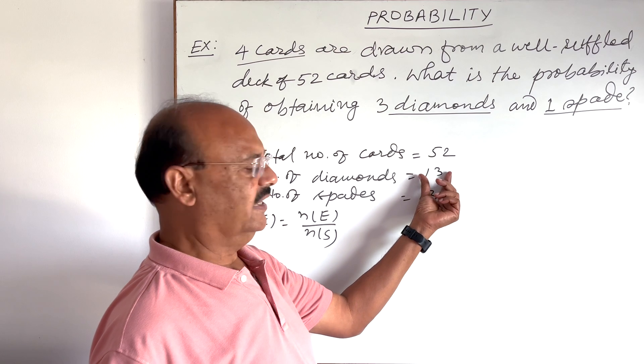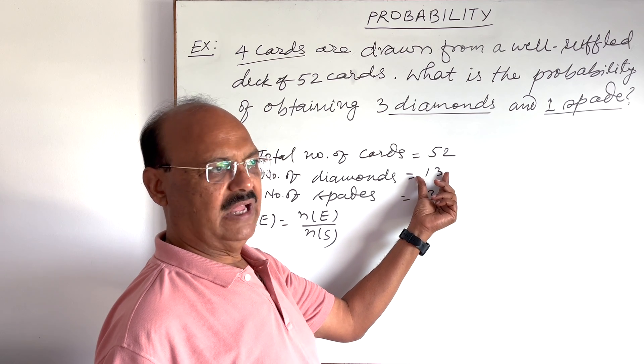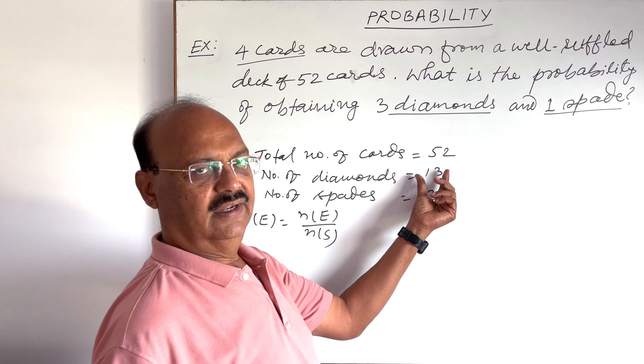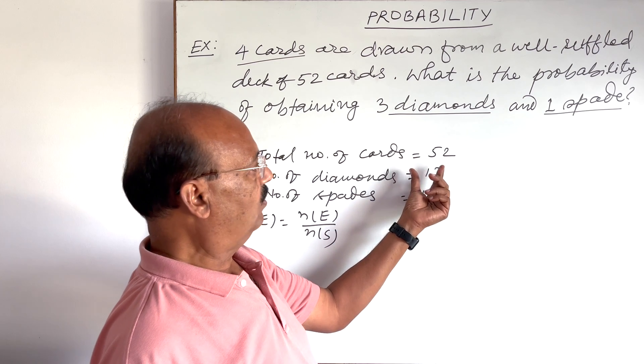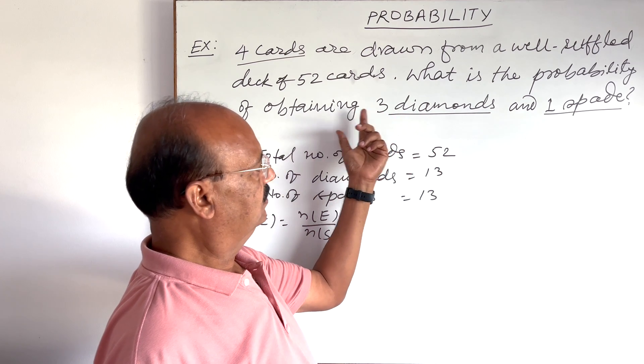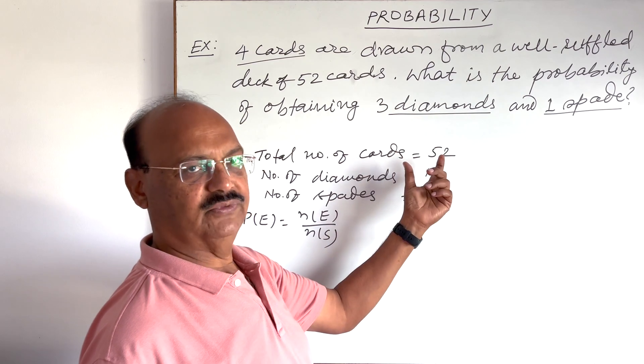Out of this 13, total number of diamonds is 13, and we want the probability of three diamonds card out of this four.